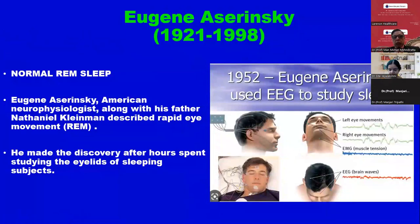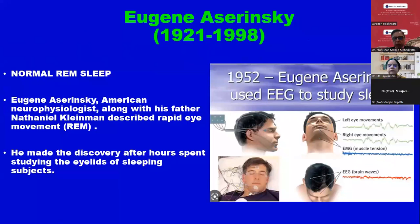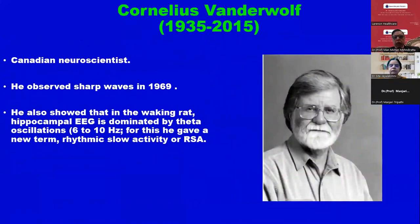Eugene used EEG to study sleep, and then came sleep studies. Normal REM sleep — an American neurophysiologist along with his father described rapid eye movement, REM. He made the discovery after hours spent studying the eyelids of sleeping subjects. A Canadian neuroscientist observed sharp waves in 1969. First was spike, then spike and wave, then REM, and now sharp waves — sharp waves were described after spike and wave.